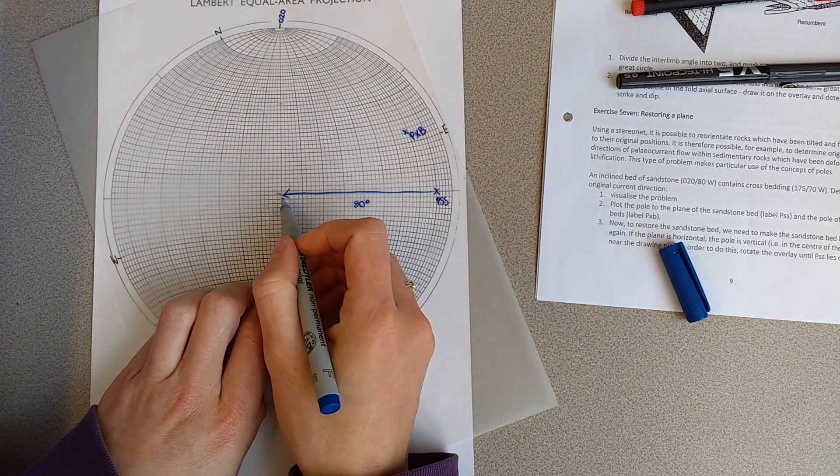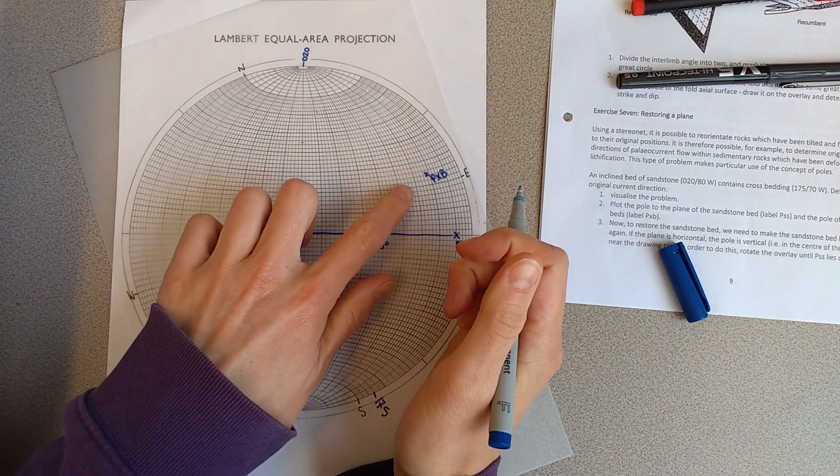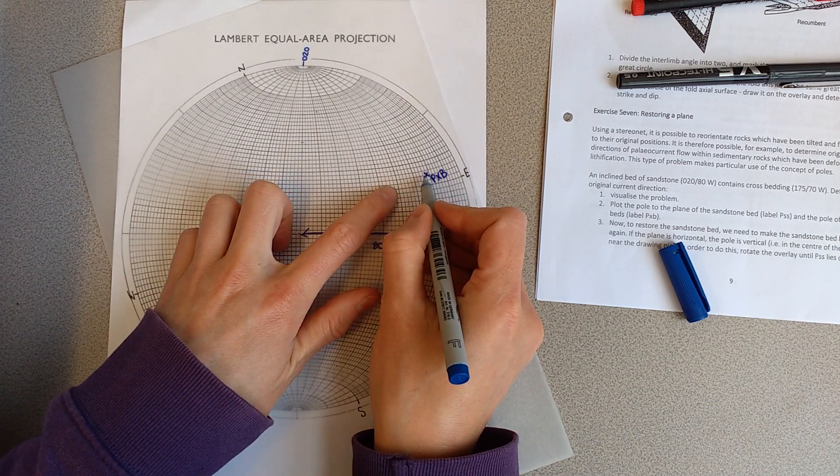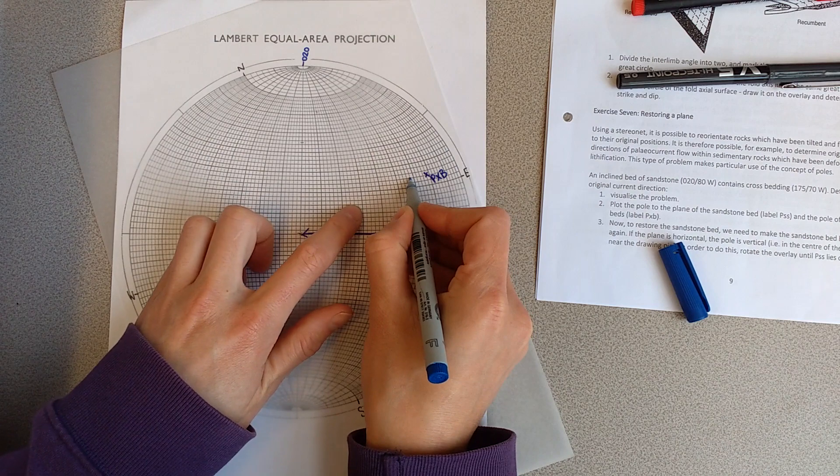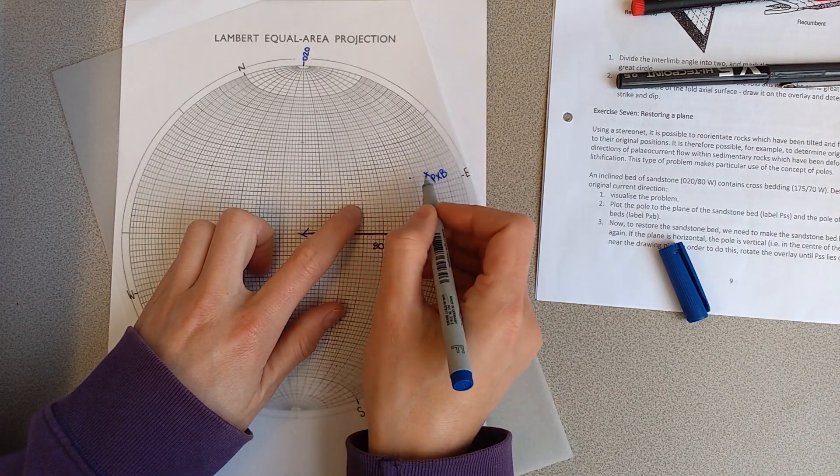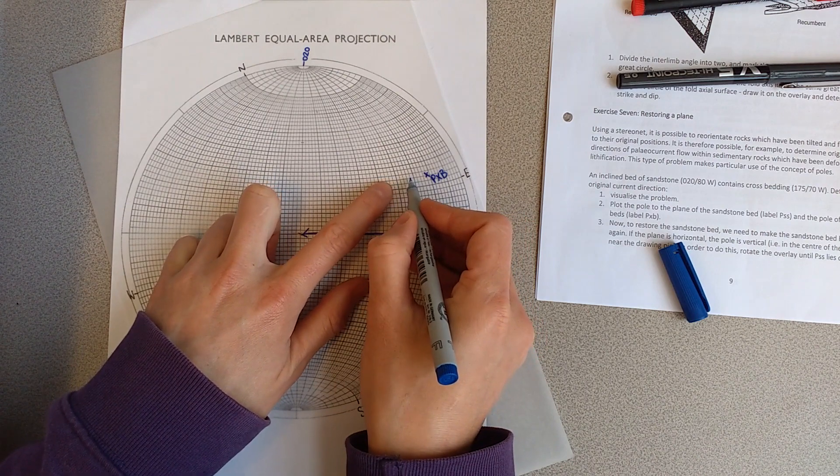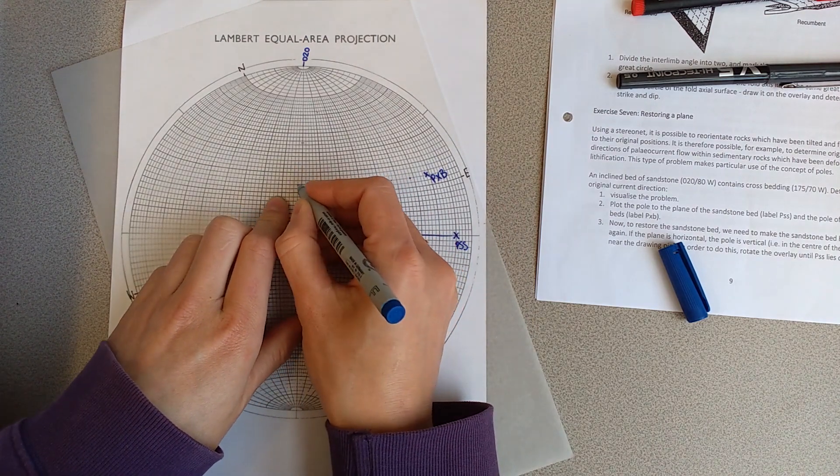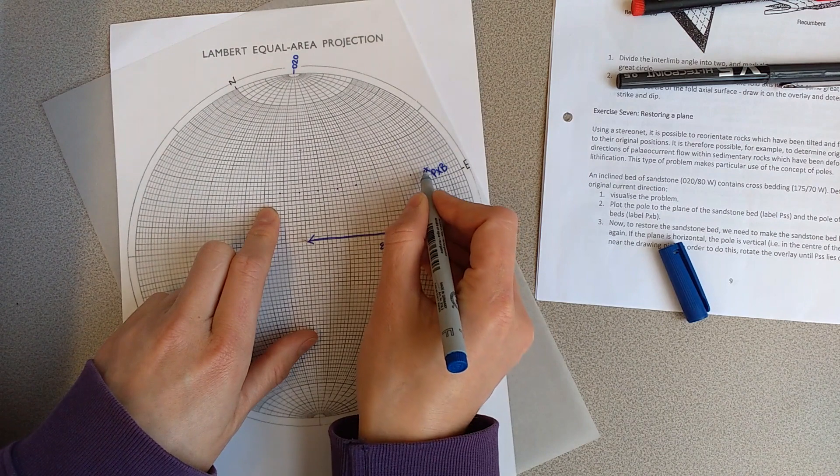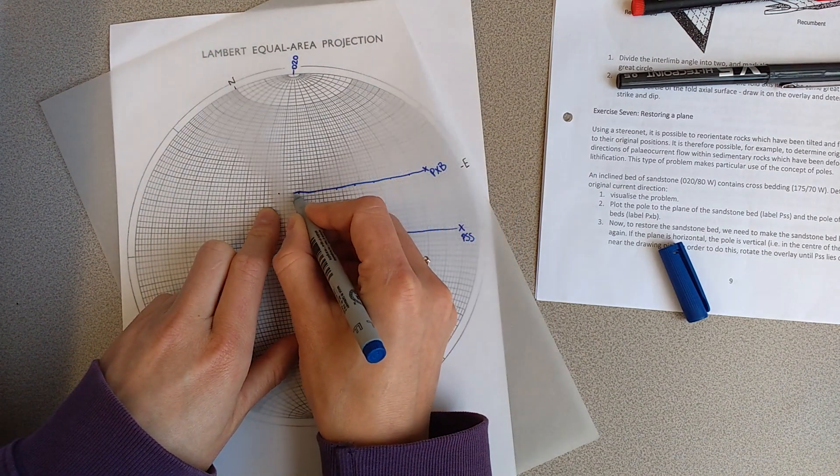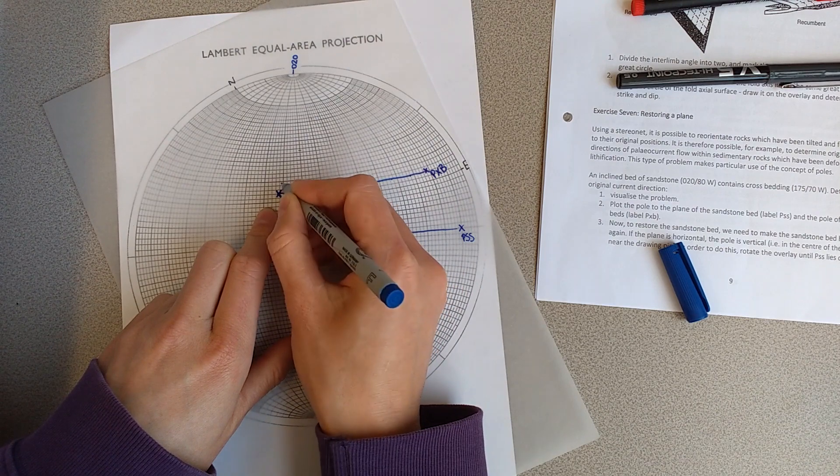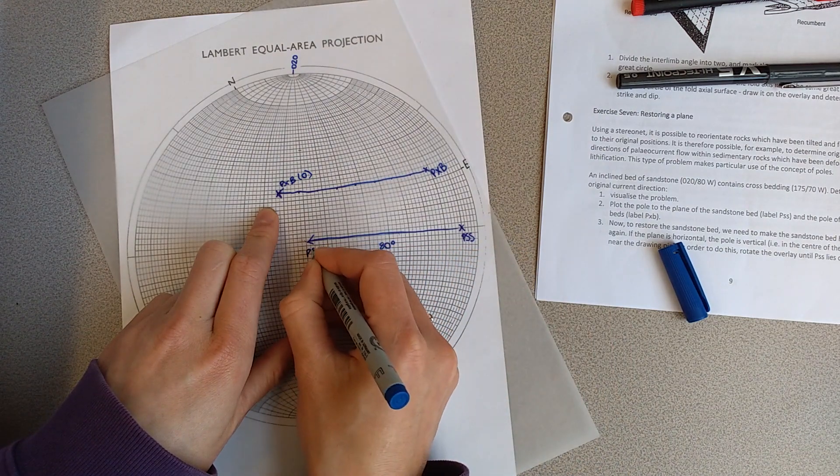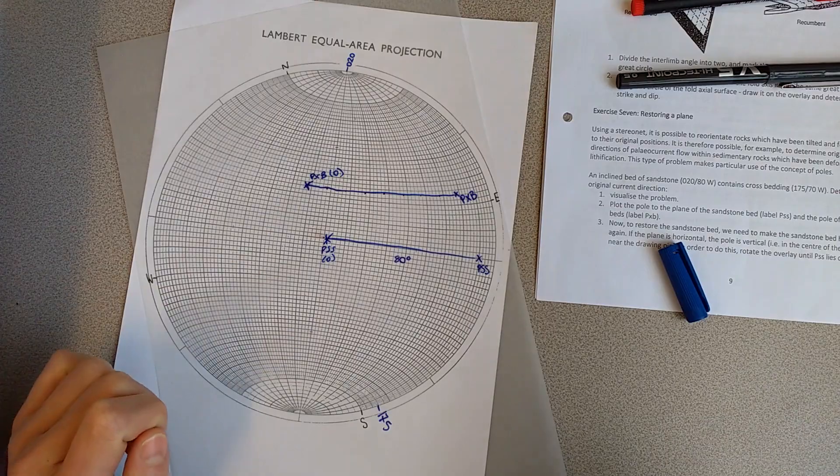As our bed is being restored back to horizontal, our cross bedding which is also on our bed is going to be restored. We're going to move the cross bedding by exactly the same amount. We're going to move it along the small circle, so the lines which are going around the stereonet. That would be 10, 20, 30, 40, 50, 60, 70, 80 degrees. That is going to be the new point of our PXB restored. This is our PSS zero right in the middle of the stereonet.